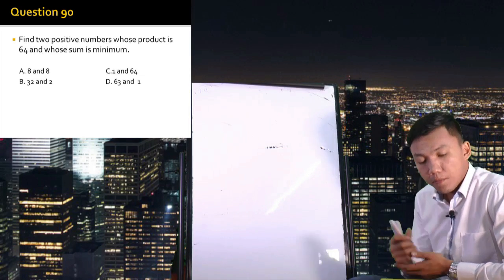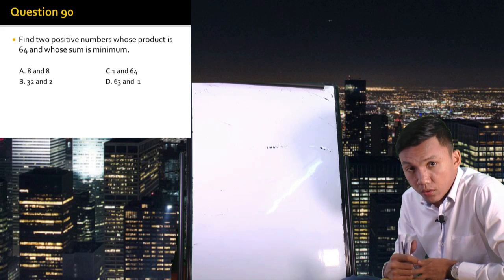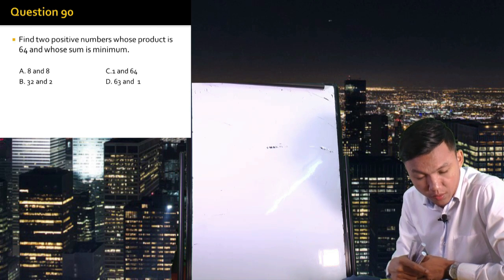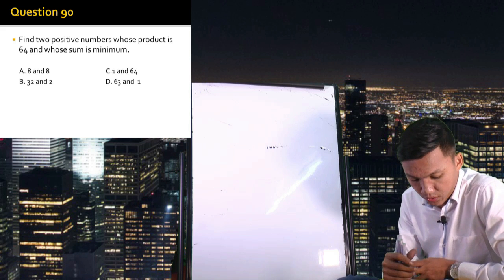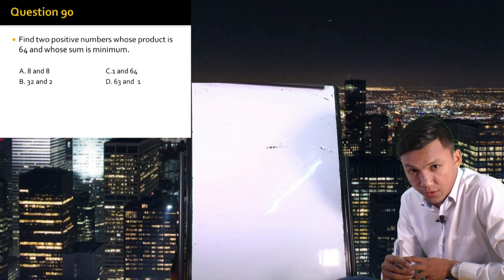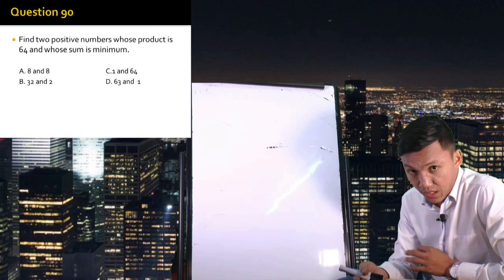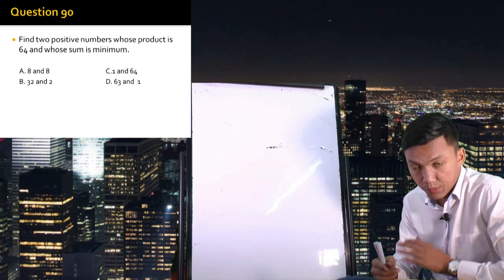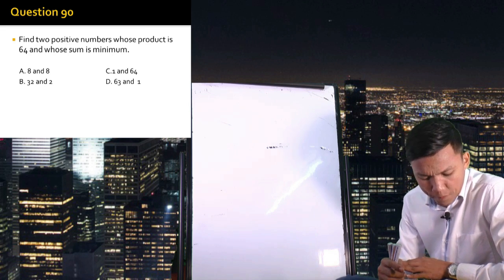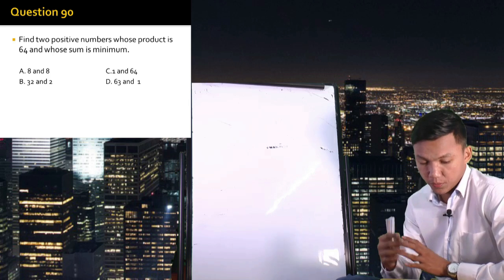Number 90: Find two positive numbers whose product is 64 and whose sum is minimum. This is an application of maxima and minima in differential calculus, but the easiest way is to try every choice. For letter A: 8 and 8 — their product is 64 and their sum is 16. For letter B: 32 and 2 — product is 64 but sum is 34, which is larger than 16.